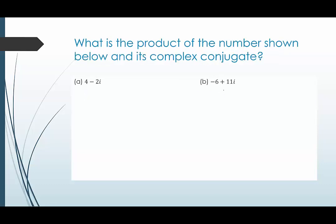What is the product of the number shown below and its complex conjugate? So we're multiplying the number shown below by its complex conjugate. First, we start with this number. What's the complex conjugate here? Keep the real part the same. We see that was minus, so I changed it to plus two i.